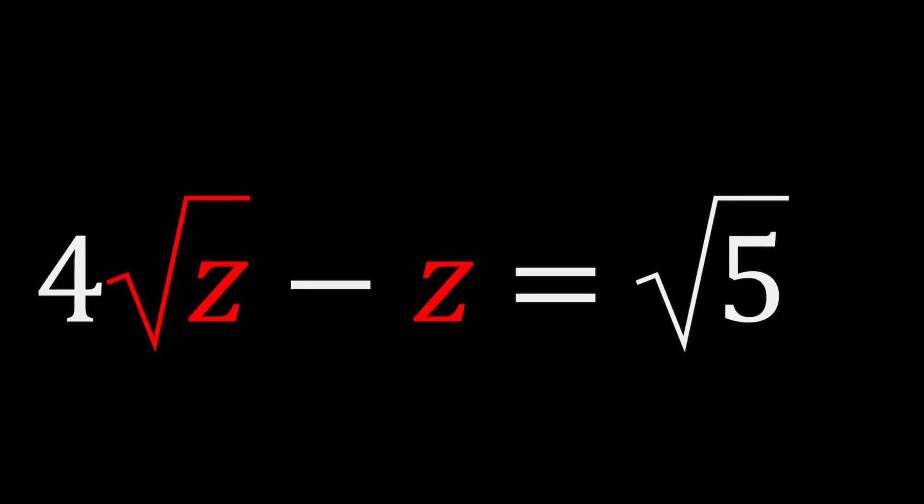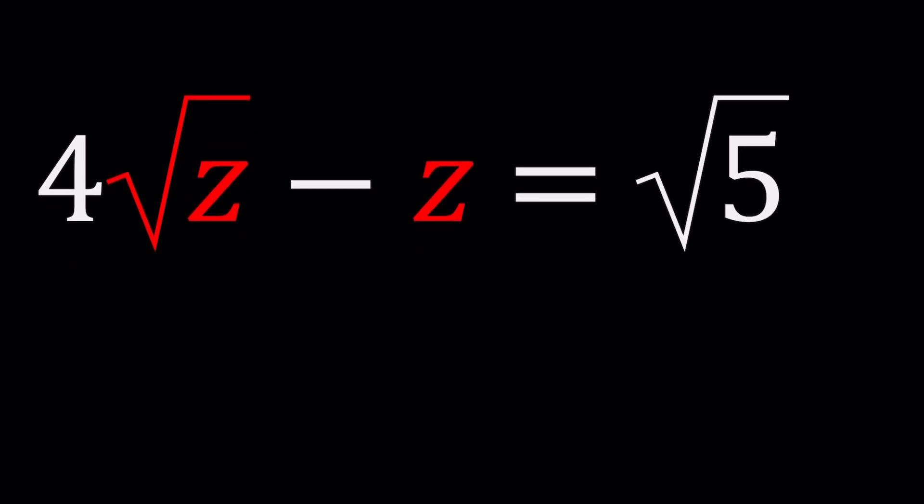Welcome to a plus b i. This channel is all about complex numbers, and in this video we're going to be solving a radical equation. We have 4√z - z = √5. I'll be presenting two methods.